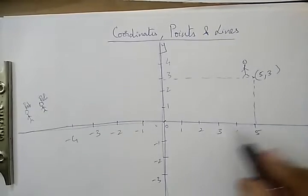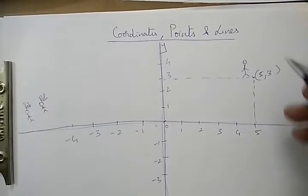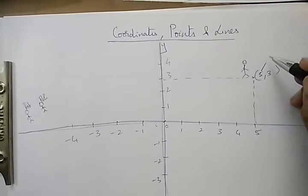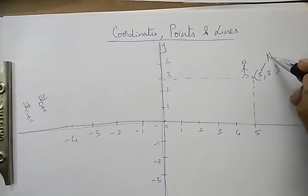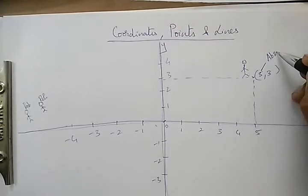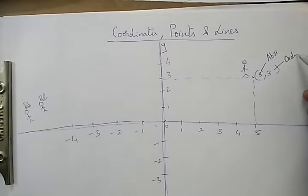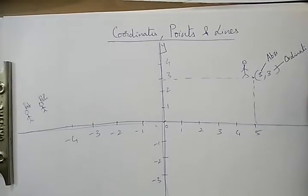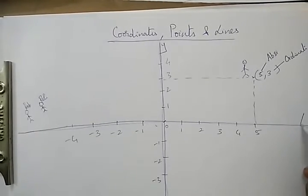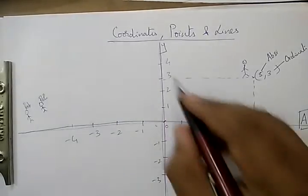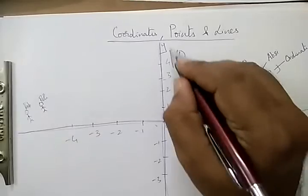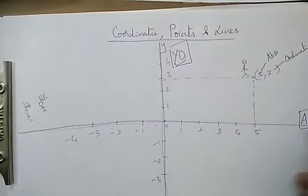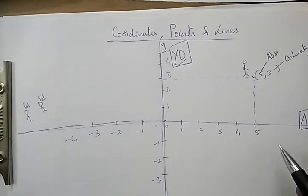This is the whole system of having coordinates. This x-value is also known as the abscissa, and the y-value is also known as the ordinate. If you want to remember it: think of x-acts - the abscissa belongs to x. And 'y-o' - the ordinate belongs to y.